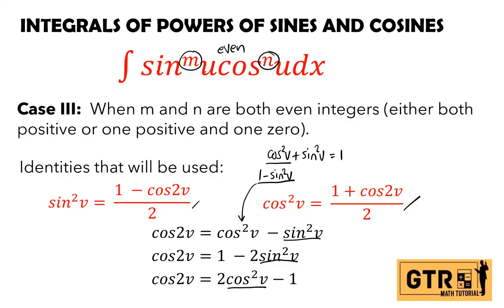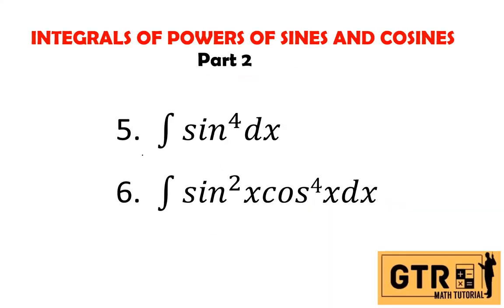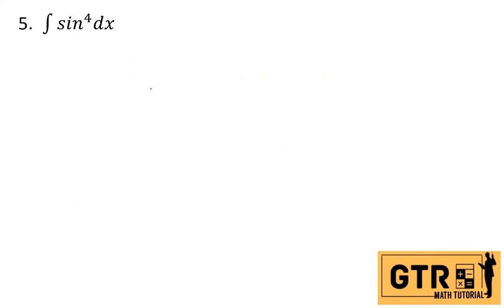If the exponents are both even, we use these half-angle identities. If one exponent is odd, we use case 1 or case 2 identities. So examples number 5 and 6 — try to solve first before watching my solution. Let's start. Number 5: integral of sine to the 4th x dx.